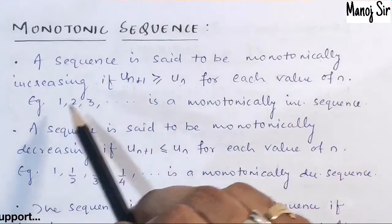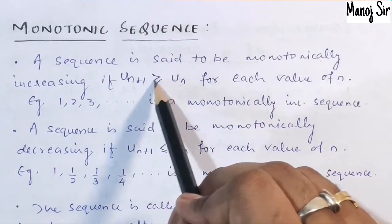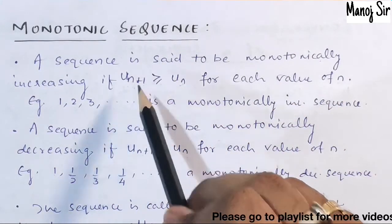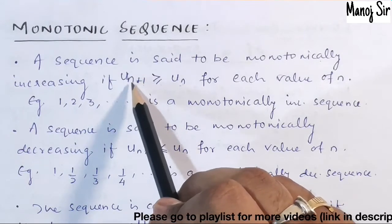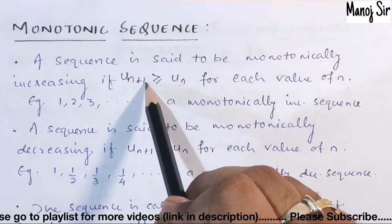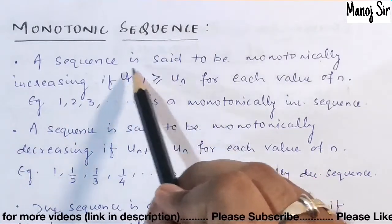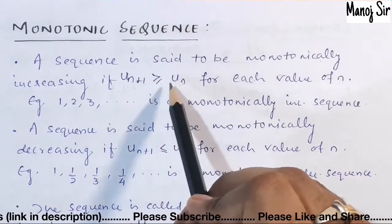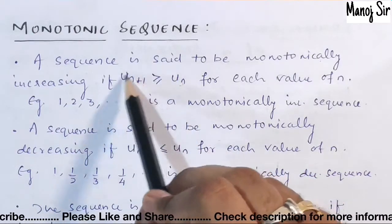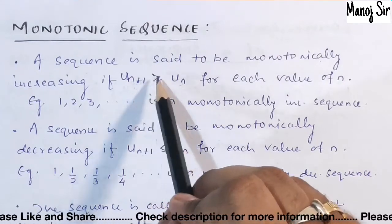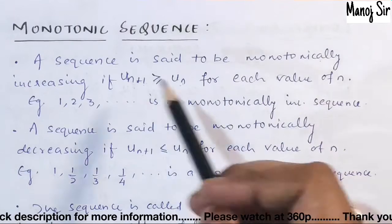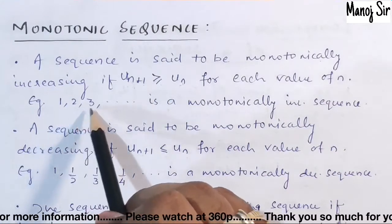A sequence is said to be monotonically increasing if u(n+1) is greater than or equal to u(n) for each value of n. Here, u(n+1) is the next value after u(n), so the next value should be either greater than or equal to u(n) for each value of n.